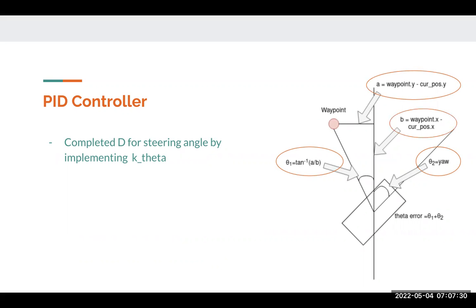And then after completing the D component, we also implemented an I component by accumulating the proportional error of the steering angle over time.